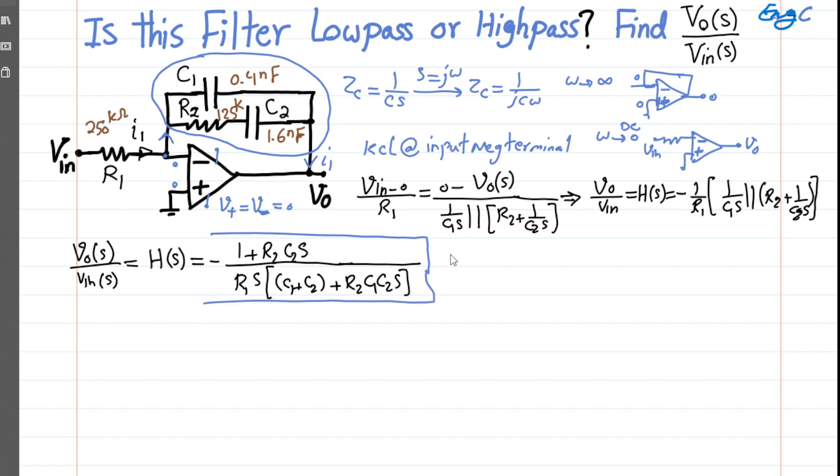As a result, what I can say is we have one, two poles in the system and one zero. So my zero is at S equal to, of course, set this to zero, you get -1/(R2·C2).